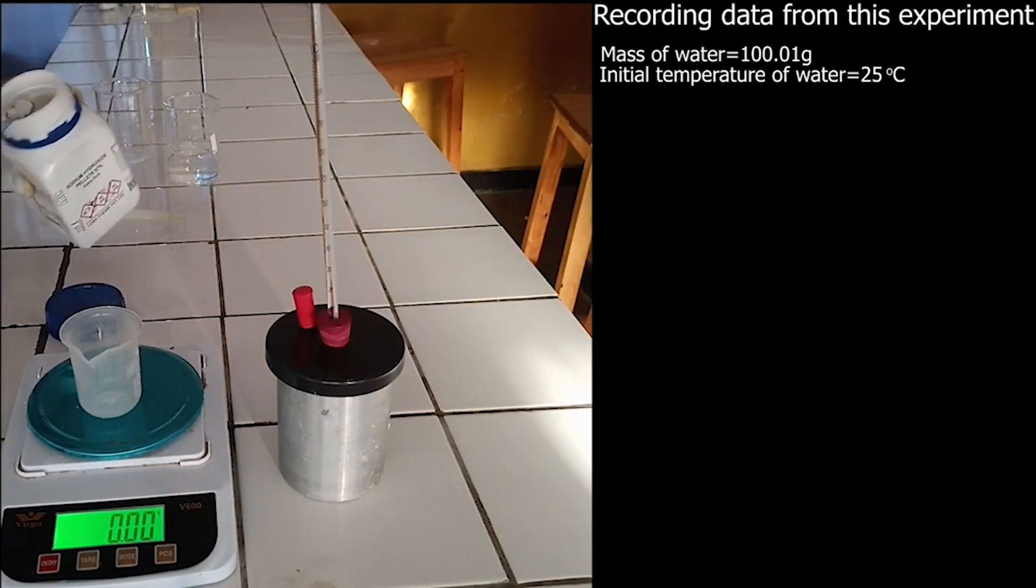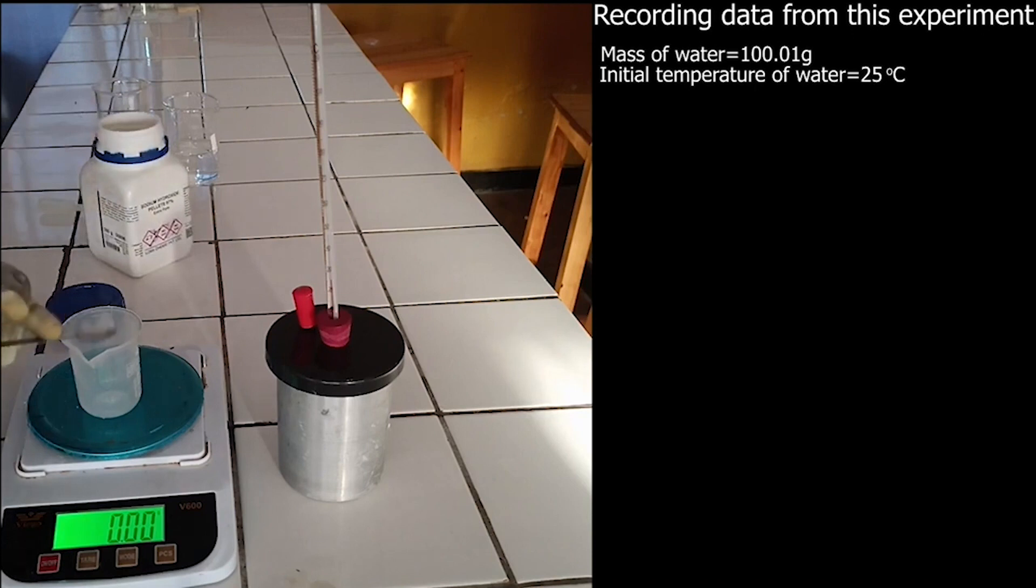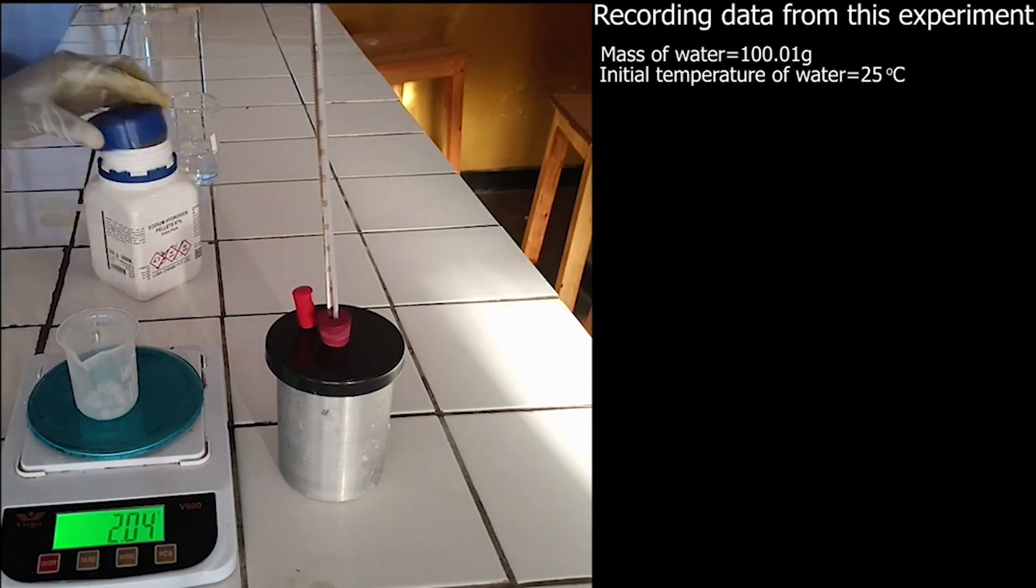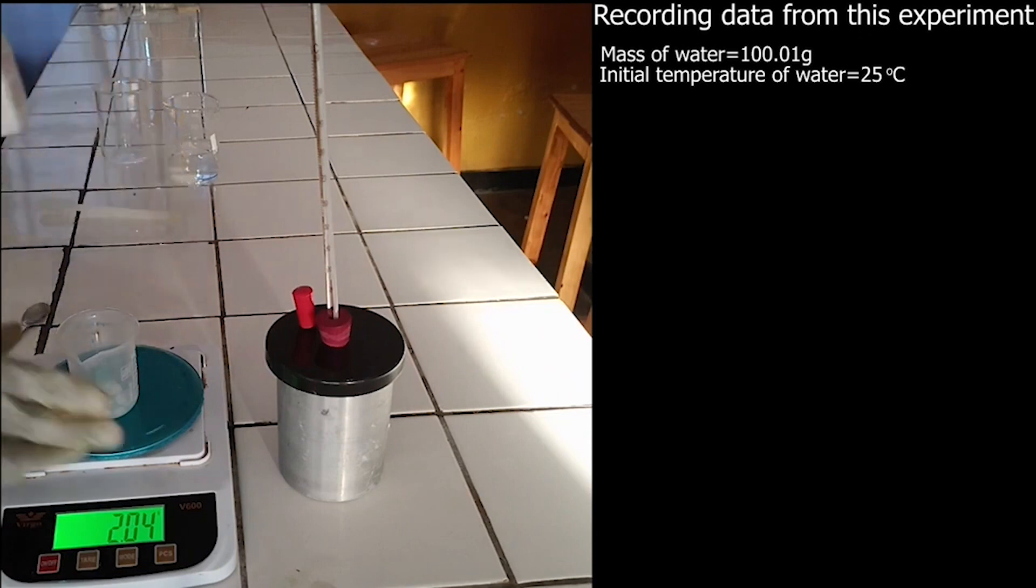Set balance to zero and weigh the mass of sodium hydroxide. As you see, the mass of sodium hydroxide used in this experiment is equal to 2.04 grams.